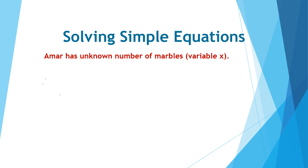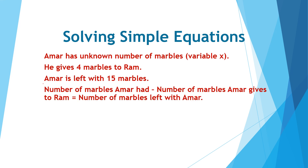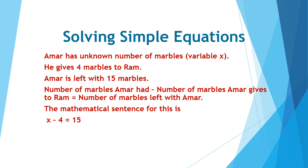Amar has an unknown number of marbles, which we represent by a variable x. He gives 4 marbles to Ram. Amar is left with 15 marbles. The number of marbles Amar had minus the number he gives to Ram equals the number of marbles left. The mathematical sentence for this is: x minus 4 is equal to 15.